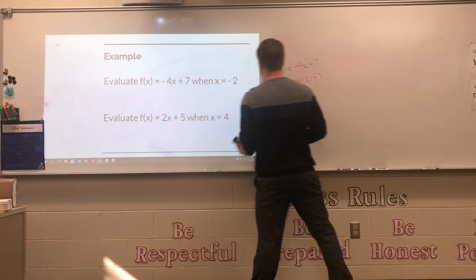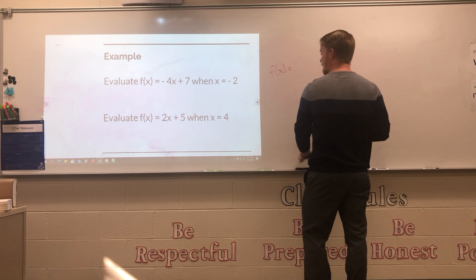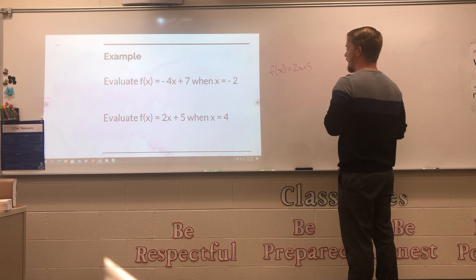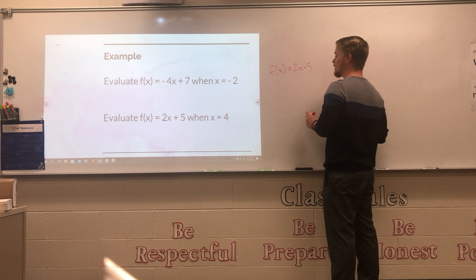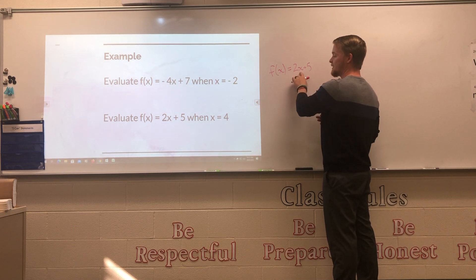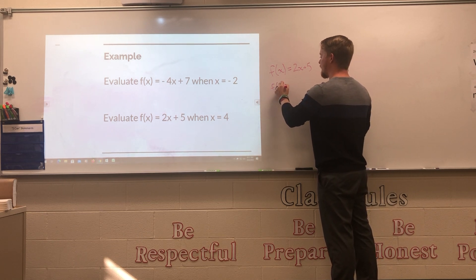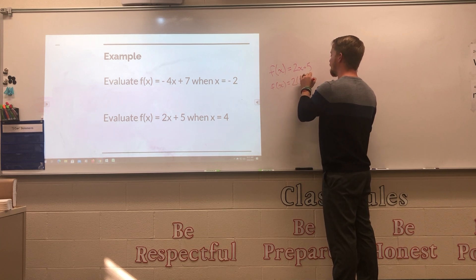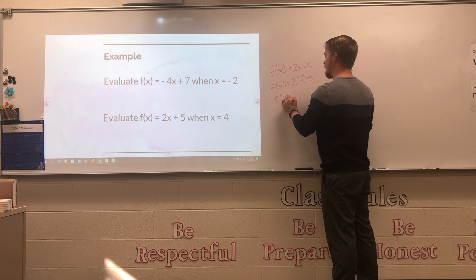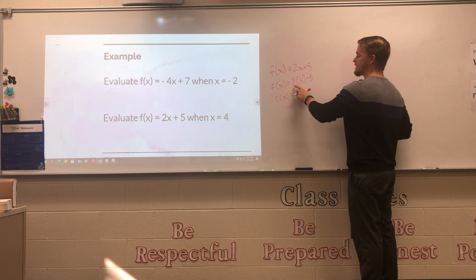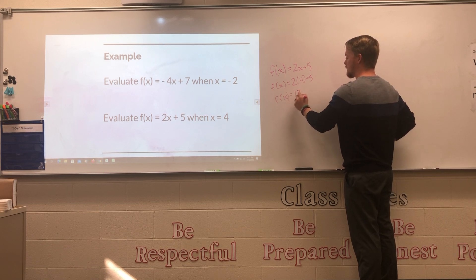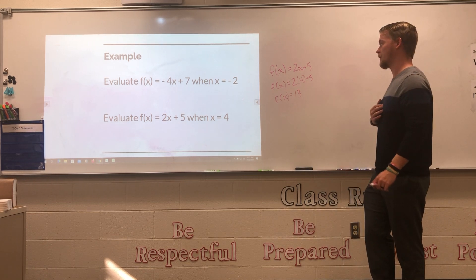For the second example: f(x) = 2x + 5, evaluate when x = 4. Plug in 4: f(x) = 2(4) + 5. Two times 4 is 8, plus 5 is 13. So your final answer is f(x) = 13.